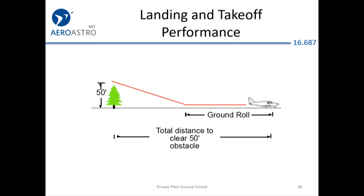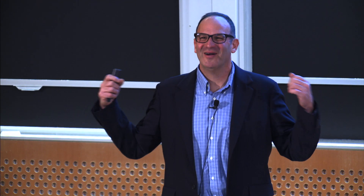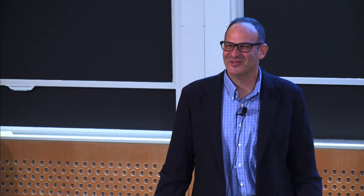Ground roll and total distance to clear the 50-foot obstacle — I was telling you about the Cirrus pilot who wanted to go to an airport with about 2,300 feet of usable runway, and the Cirrus takes 2,100 feet. Another East Coast Aeroclub guy wanted to go to a private airpark in Falmouth, Massachusetts with only 2,300 feet of runway, with a massive friend — like an NFL linebacker — full fuel, at gross weight. I said, if you do everything perfect, you're going to use up 92% of that runway. So he went to Hyannis instead.